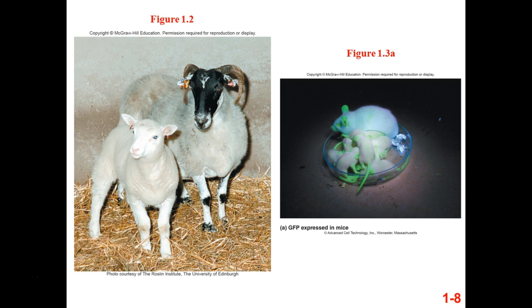There's Dolly and her surrogate mom — the one that gestated her. And we genetically modify all the time — unfortunately our food is genetically modified. These mice have been genetically modified to express a protein they wouldn't normally express: green fluorescent protein. They were given the DNA to do it and the mechanism to express it. That's why they're glowing green under the UV light.